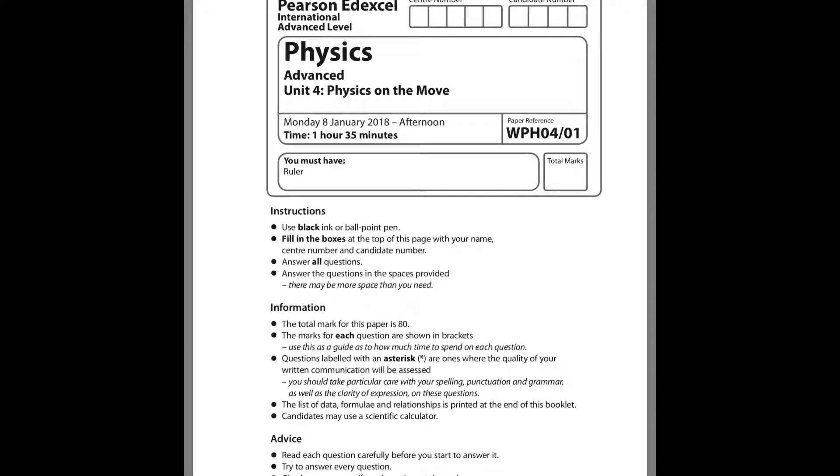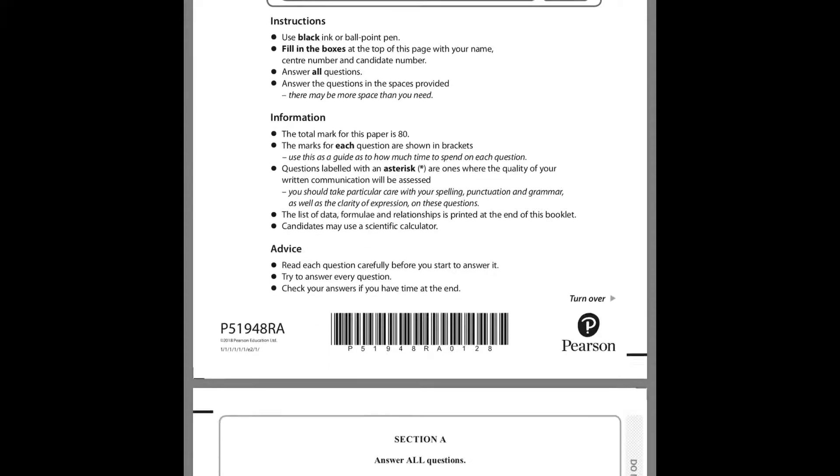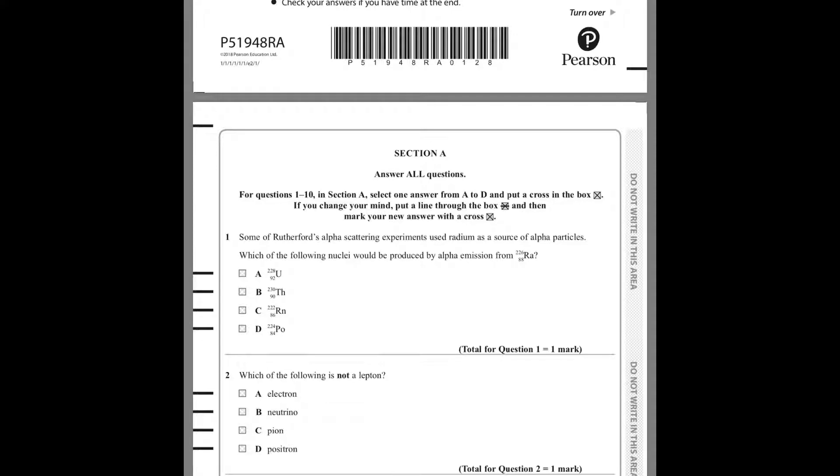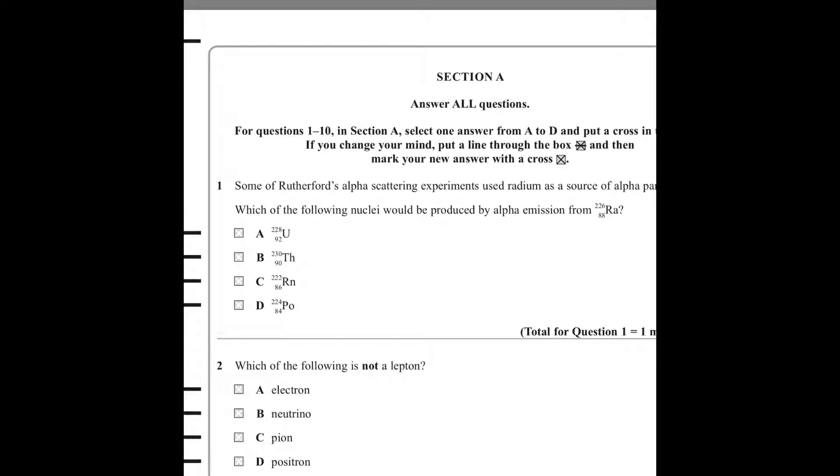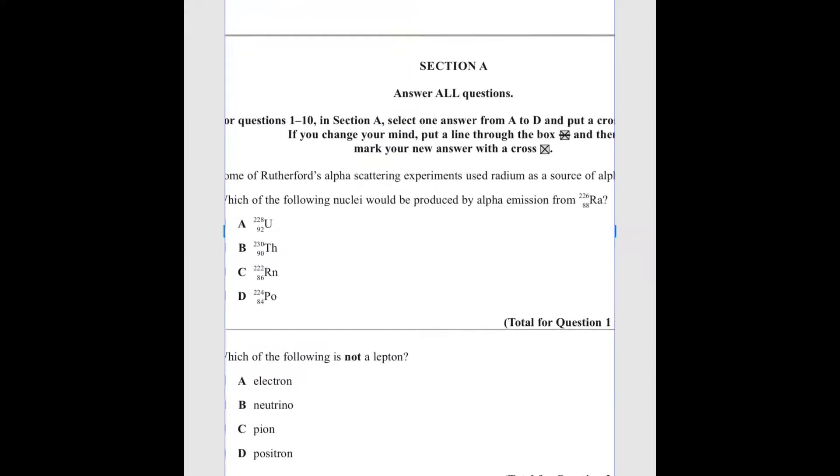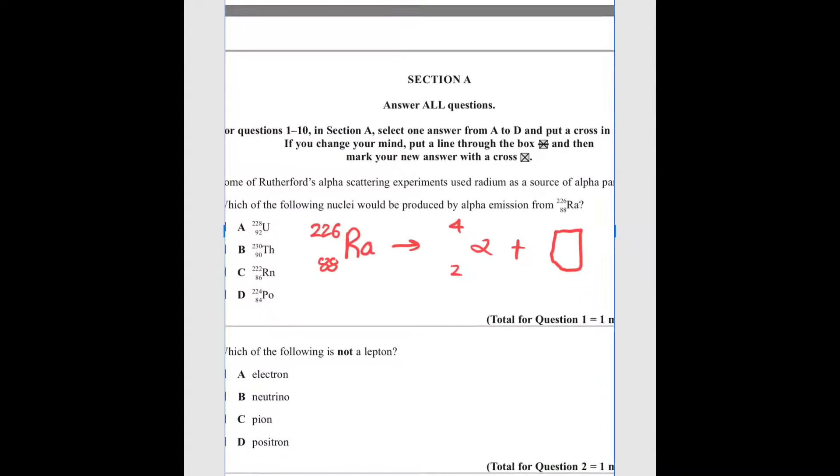Hi everyone, this is Physics January 2018 O-Level Excel paper. Let's start. Some of Rutherford's alpha scattering experiments used radium as a source of alpha particles. Which of the following would be produced by alpha emission from radium? This is alpha emission: radium-226-88 gives an alpha of 2-4 plus another particle. When we add these, we will get this. So if we have 2 plus 2 here and 86 here, 2 plus 4 gives 226, and 86 plus 2 gives 88. So the answer is C.